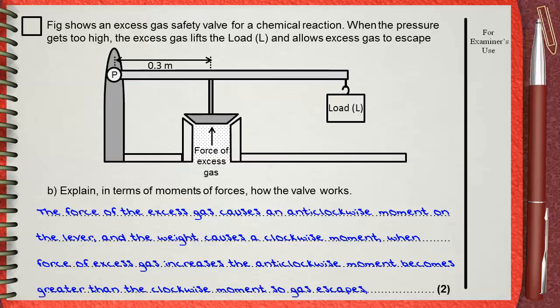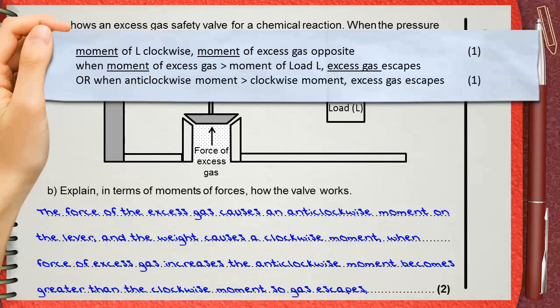So the gas escapes. The two marks are given for mentioning that the moment of the load L is clockwise and the moment of excess gas is anti-clockwise. This is one mark. When you say that when the moment of the gas becomes greater than the moment of the load, the excess gas will escape, this is the second mark. You can also say that when anti-clockwise moment becomes greater than the clockwise moment, the gas will escape. This gives the same meaning.